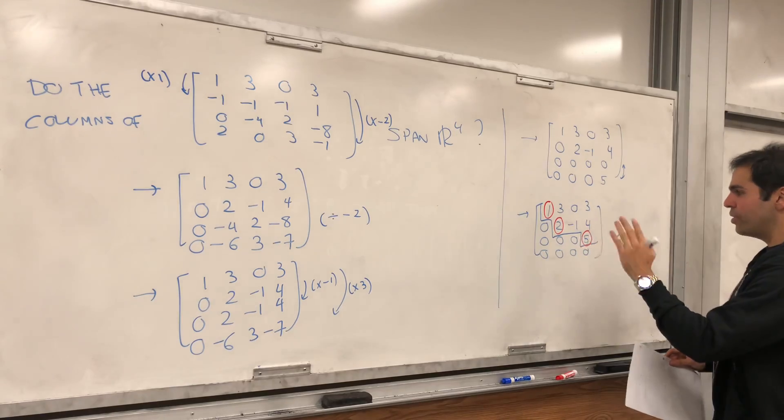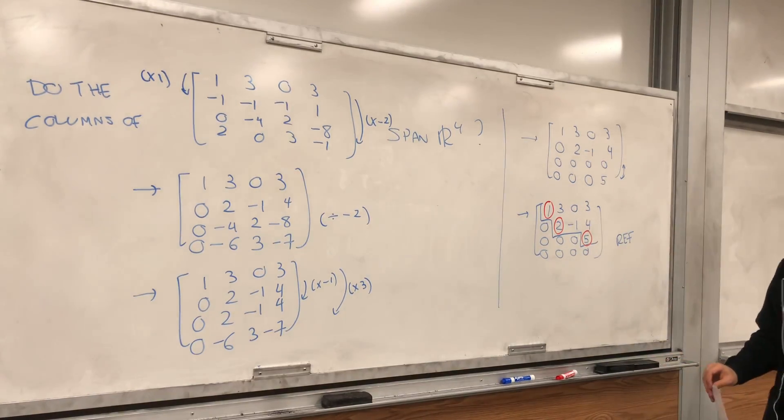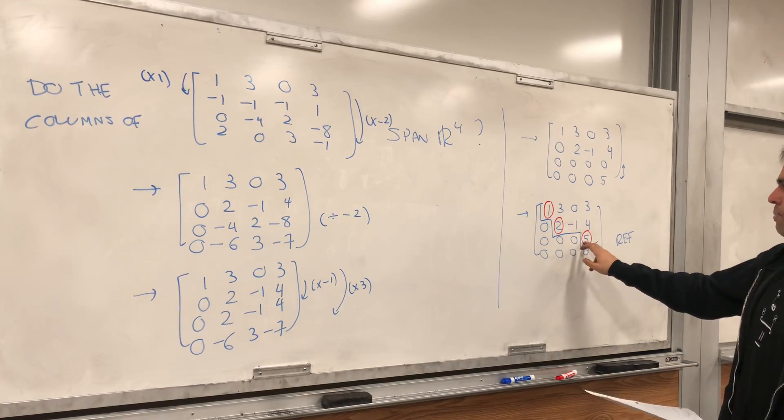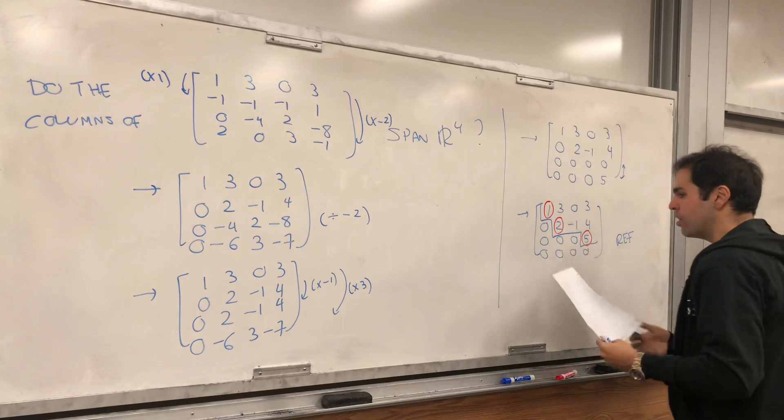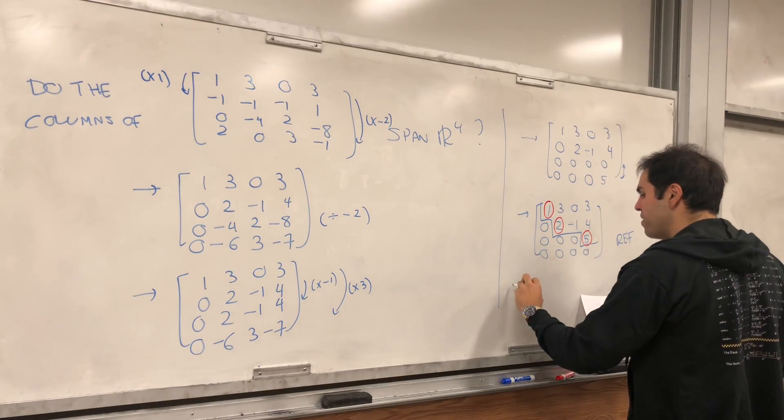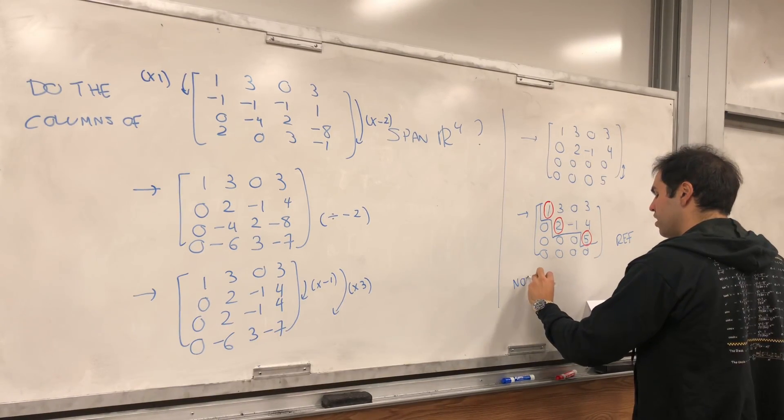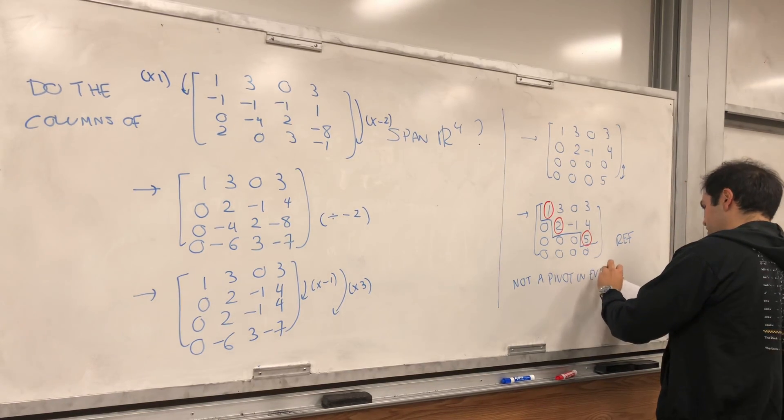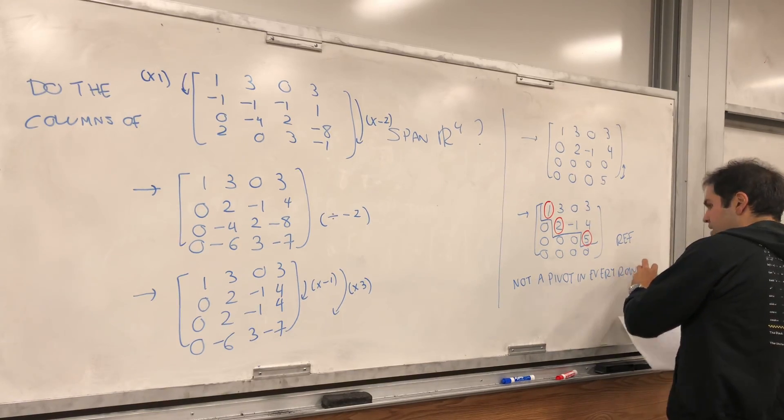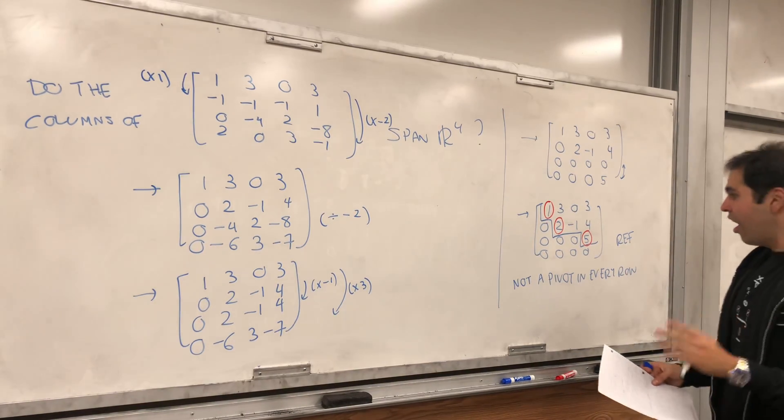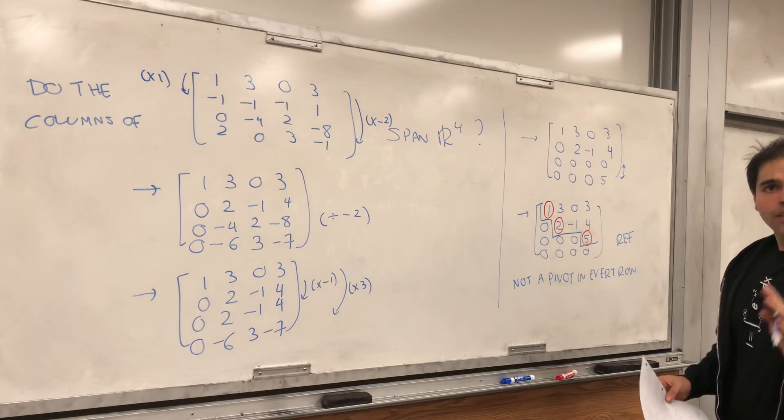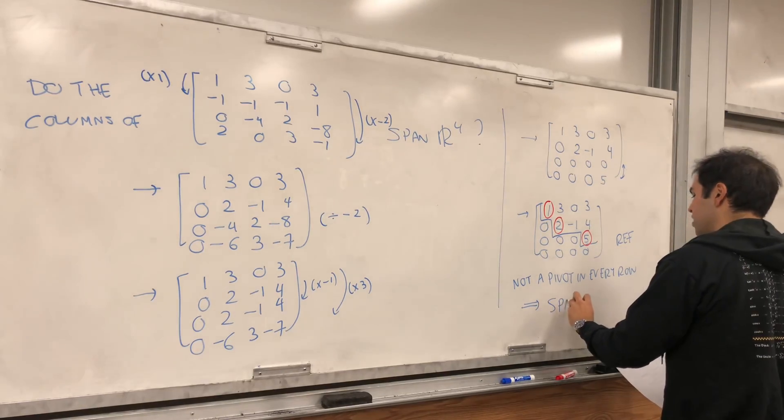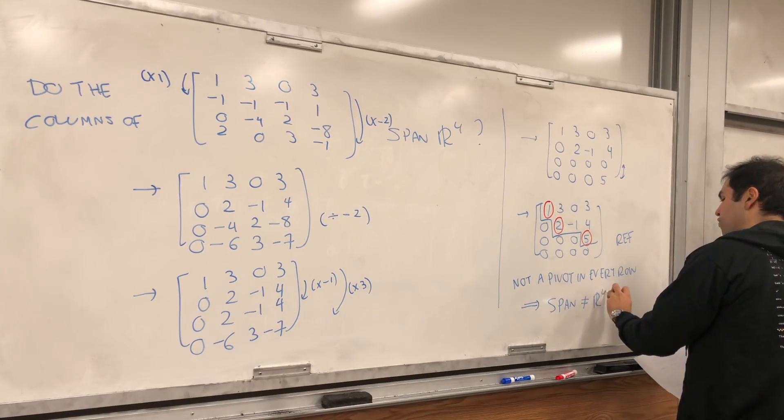And then notice, well, turns out this has to do with the fact if there's a pivot in every row or not, so notice, there are only three pivots, but a four by four matrix, so we don't have a pivot in every row, not a pivot in every row.